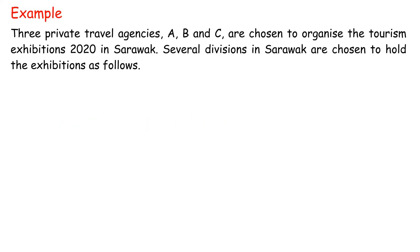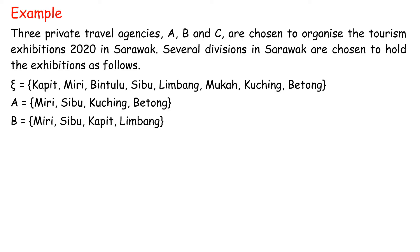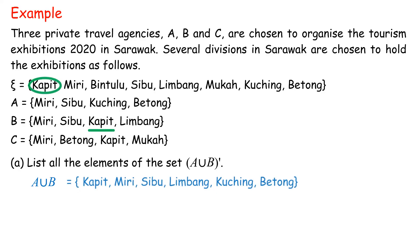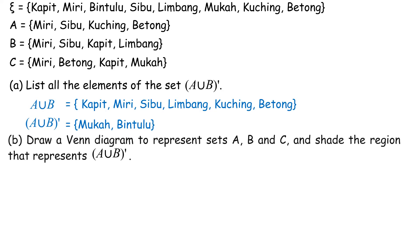Example. Three private travel agencies A, B, and C are chosen to organize the Tourism Exhibitions 2020 in Sarawak. Several divisions in Sarawak are chosen to hold the exhibitions. Universal set = {Kapit, Miri, Bintulu, Sibu, Limbang, Mika, Kuching, Bintulu}. A = {Miri, Sibu, Kuching, Bintulu}, B = {Miri, Sibu, Kapit, Limbang}, C = {Miri, Bintulu, Kapit, Mika}. Part A: List all the elements of complement of (A union B). A union B = {Kapit, Miri, Sibu, Limbang, Kuching, Bintulu}. Complement of (A union B) = {Mika, Bintulu}. Part B: Draw a Venn diagram and shade the region that represents complement of (A union B).